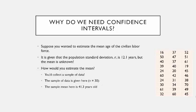Here's the example: suppose you want to estimate the mean age of the civilian labor force. It is given that you know the population standard deviation sigma — whenever we see a Greek letter, that tells us it's a population parameter — sigma, the population standard deviation, is 12.1 years, but the average is unknown. So how would you estimate the mean?